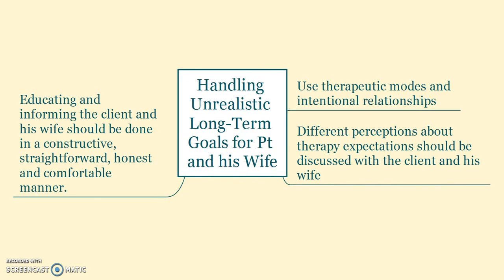When dealing with goals, sometimes the client and their spouse — in this instance Frank and his wife — can have some unrealistic long-term goals. Ways to address this include first educating and informing the client and his wife in a constructive, straightforward, honest, and comfortable manner. You also want to utilize therapeutic modes and intentional relationships, and therapy expectations should be discussed with the client and his wife towards the beginning of treatment.